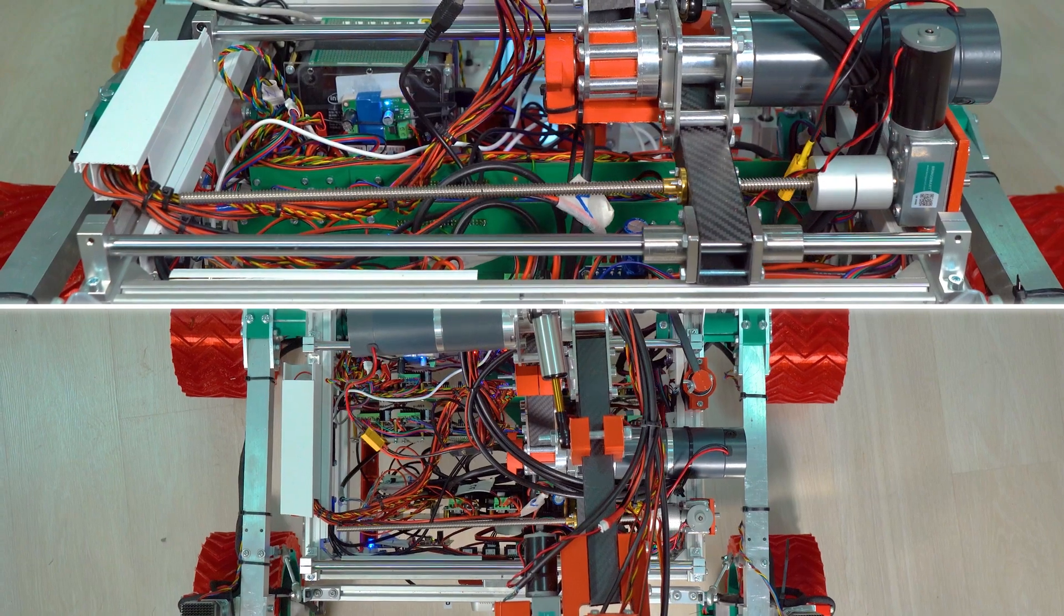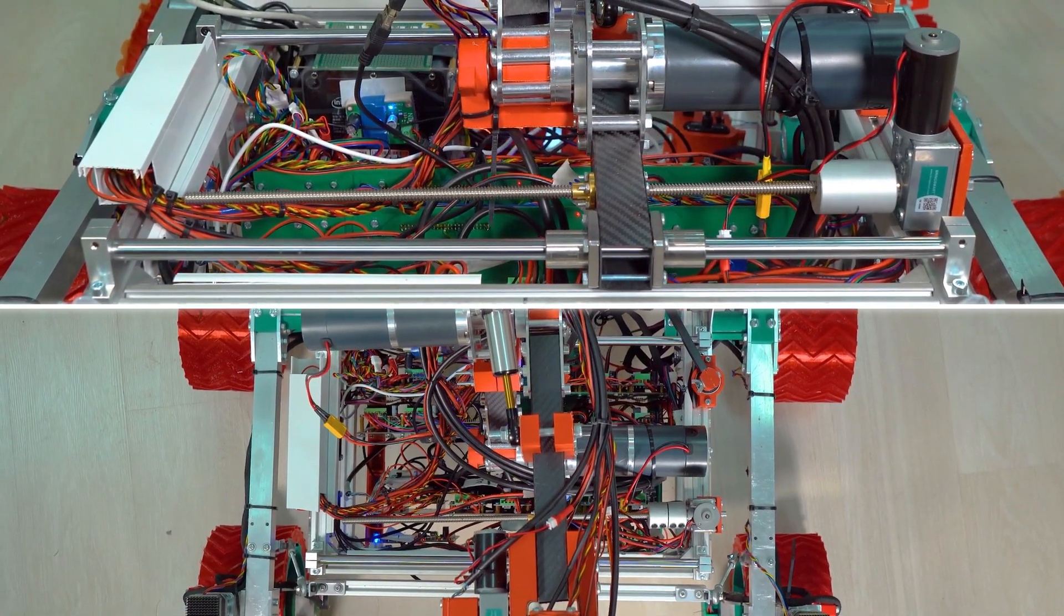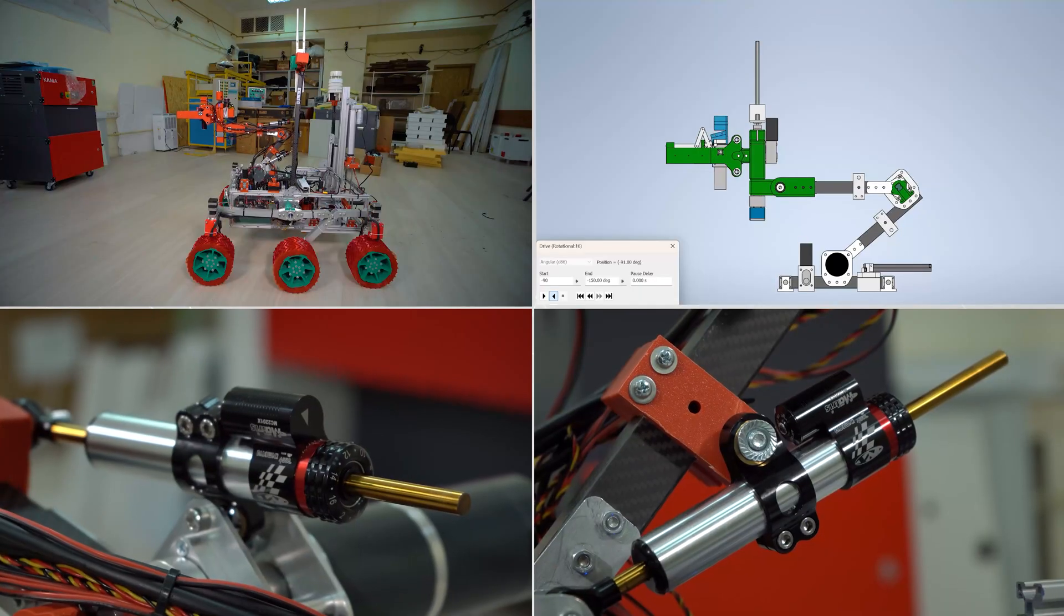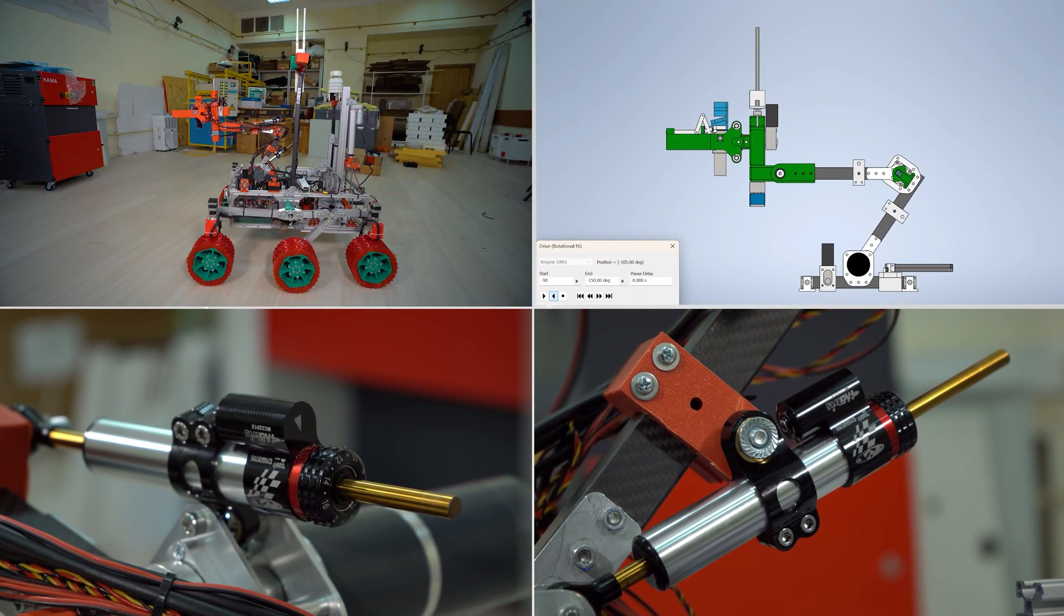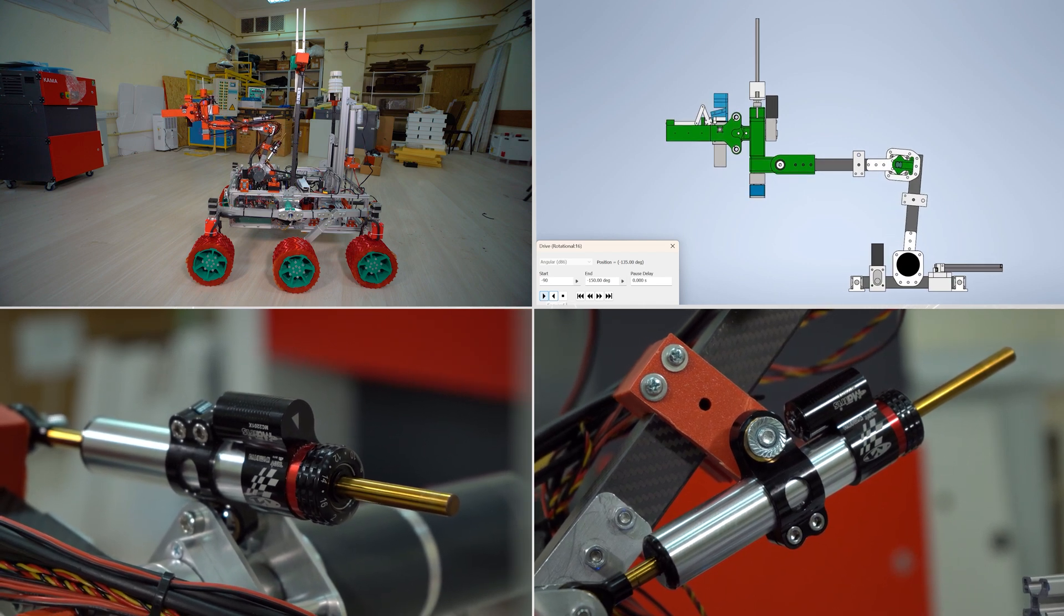In the base joint, we opted for a sliding mechanism. Turntable was tested as well. However, it was either too heavy or too weak. To increase precision of our arm under a wide range of loads, we introduced hydraulic dampers on two most powerful joints.